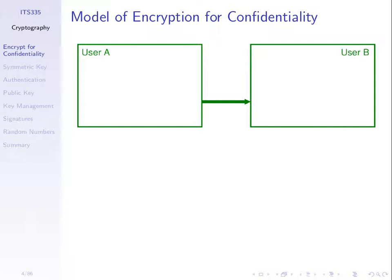A model for encryption: think of two normal users, A and B — like Alice and Bob. A wants to send data to B, and they want that data to be confidential. That is, when A sends data to B, no one else except A or B should be able to see the original data. That's the goal.